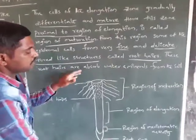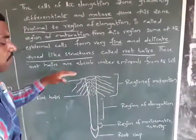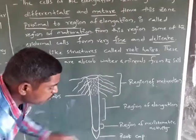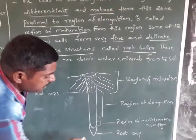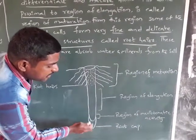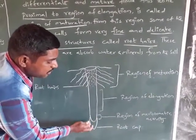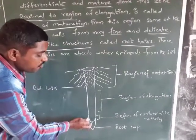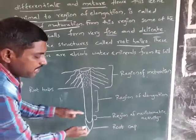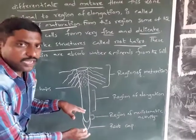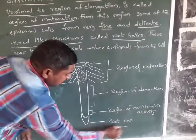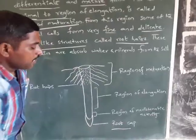This is the picture of the regions of the root. Here is the root cap, which protects the root apex and helps make the way through the soil. That is the function of the root cap.